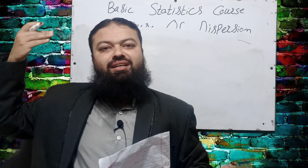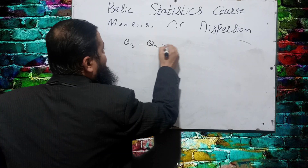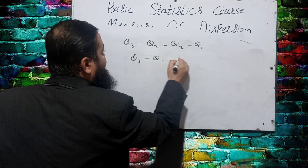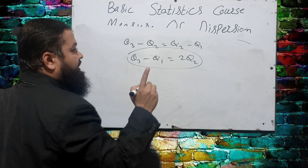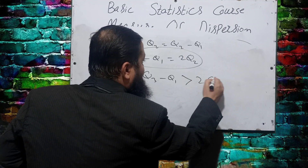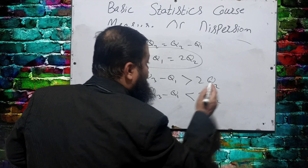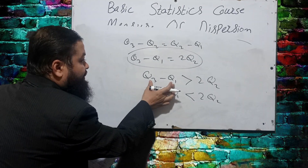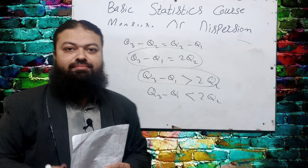For a positively skewed distribution: in a symmetric distribution, Q₃ − Q₂ = Q₂ − Q₁, or equivalently Q₃ + Q₁ = 2Q₂. For a positively skewed distribution, Q₃ − Q₁ > 2Q₂. For a negatively skewed distribution, Q₃ − Q₁ < 2Q₂. So for a positively skewed distribution, Q₃ − Q₁ > 2Q₂ is the correct option.